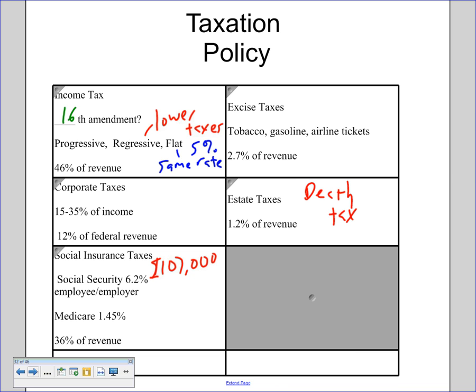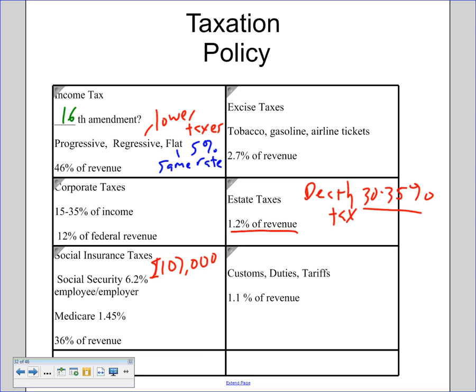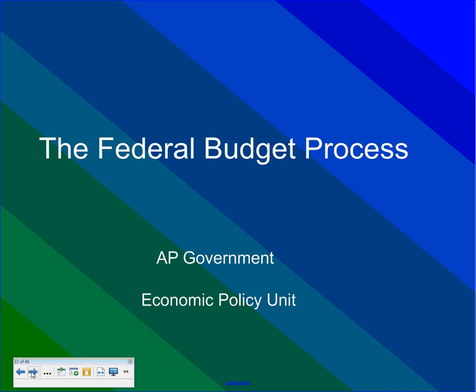Estate taxes — also called the death tax — apply when you die. You pay anywhere between 30 and 35 percent of your estate to the government, but only after the first million dollars. So if your grandparents leave you two million dollars, you'd pay 35 percent to the government and keep the rest. That only accounts for 1.2 percent of revenue. Customs duties and tariffs make up just 1.1 percent of revenue, so income tax and social insurance taxes are the real big ones.